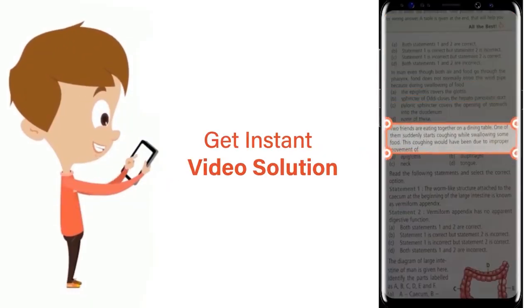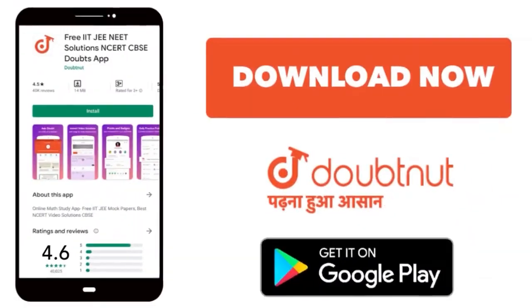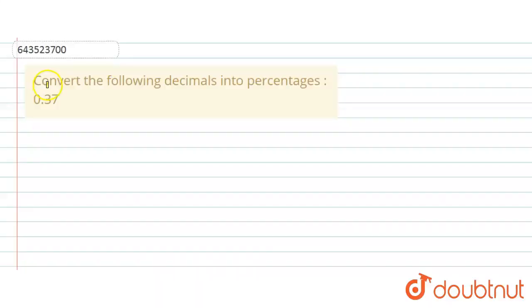Hello everyone, the question says convert the following decimal into percentage. Here the decimal is given as 0.37. Now we will change it into the percentage.